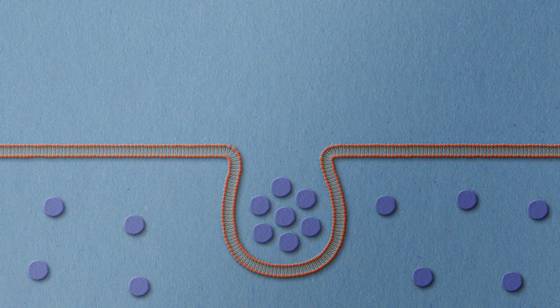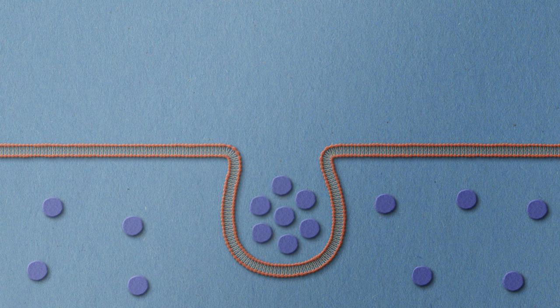Simple exocytosis is when a vesicle forms around the substance the cell wants out. It moves towards the cell membrane and fuses with it so it releases it out.